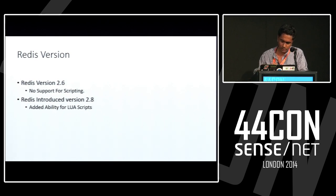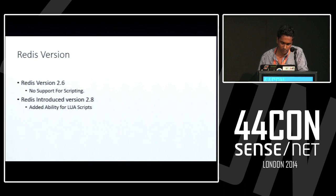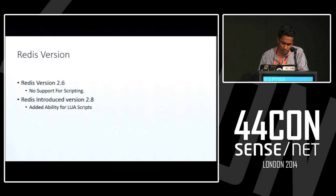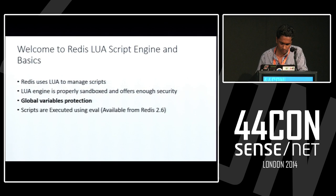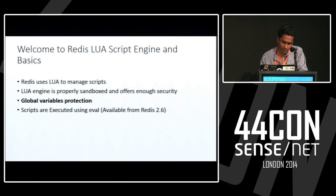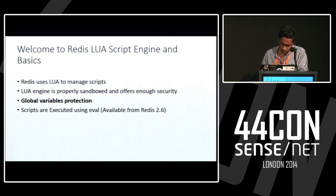For Redis versions 2.6 and below, there was no support for scripting. For versions 2.6 and above, they added the ability for scripting — Redis uses the Lua scripting engine. The Lua engine is properly sandboxed and offers security, but global variable protection can also be bypassed. Scripts are executed using EVAL. Redis limited the scripting library and enabled only a certain set of libraries for the user. The key commands: EVAL and EVALSHA are the two Redis APIs used to evaluate scripts using the Lua interpreter built into Redis.